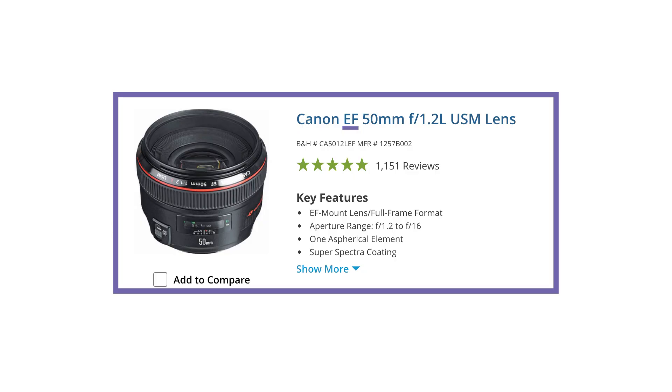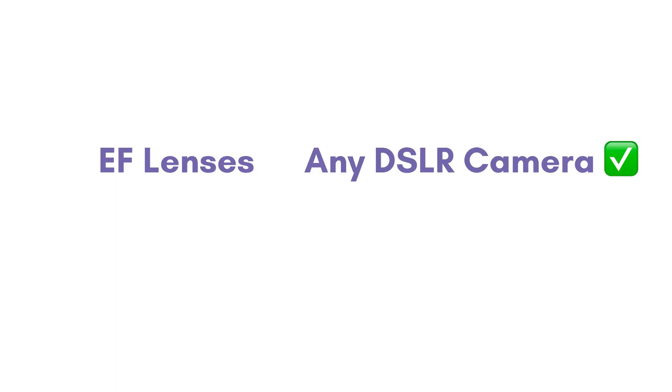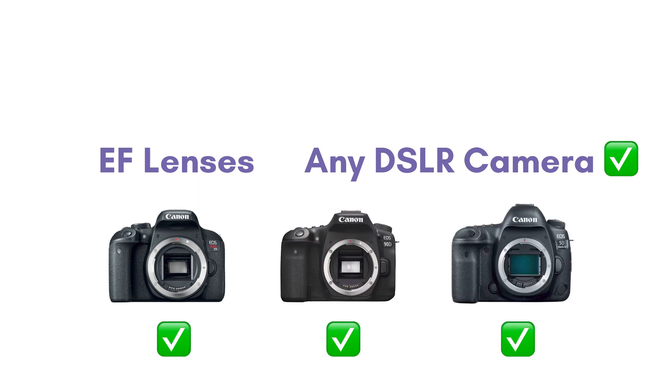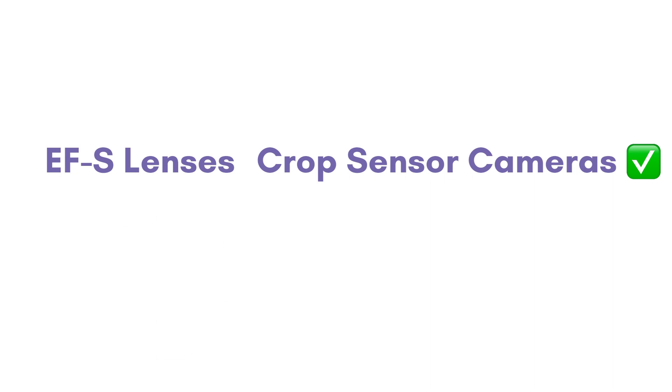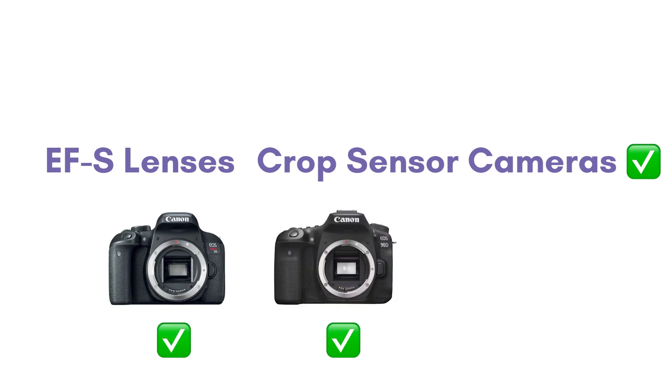Right after the brand name, you'll usually see something like EF, EFS, or RF. This is indicating what mount that lens is designed for, and this is really important when you're shopping for lenses and you already have a camera in mind. EF lenses are designed to work with any DSLR camera, from the T7i to the 90D to the 5D Mark 4. EFS lenses are designed to work with crop sensor cameras only, like the T7i or the 90D — not compatible with full frame DSLR cameras like the 5D Mark 4.